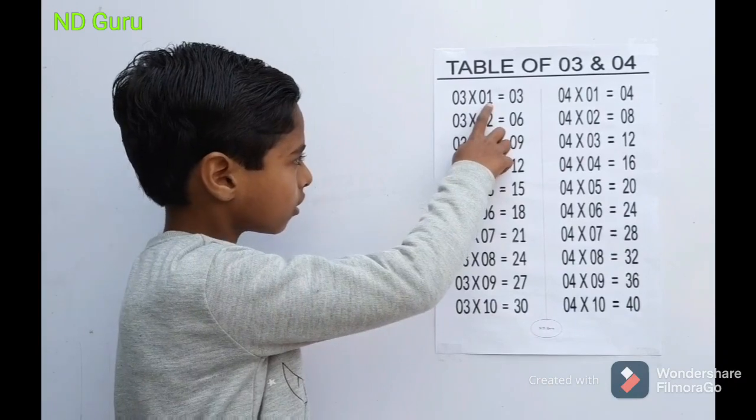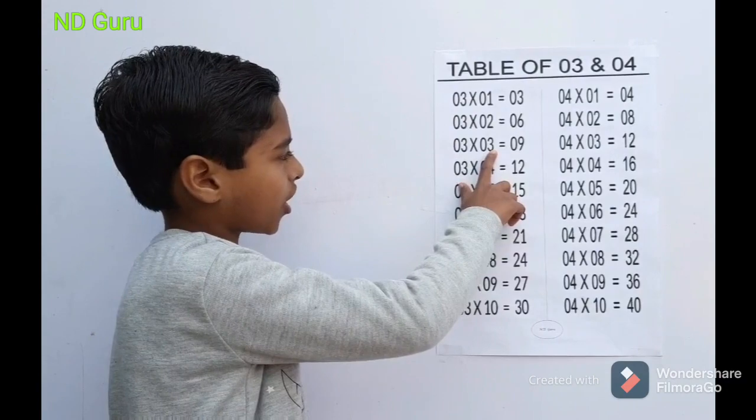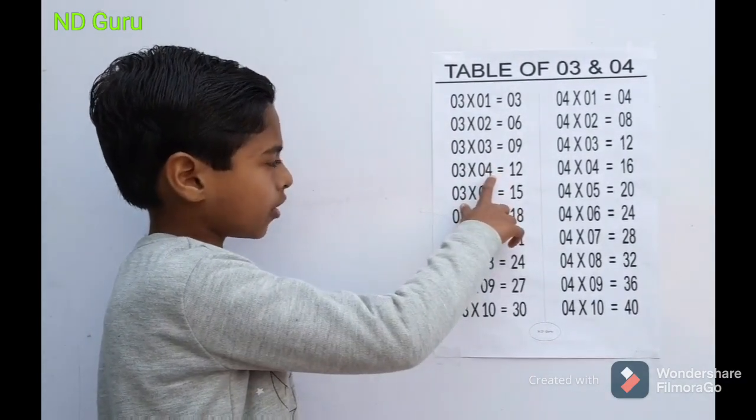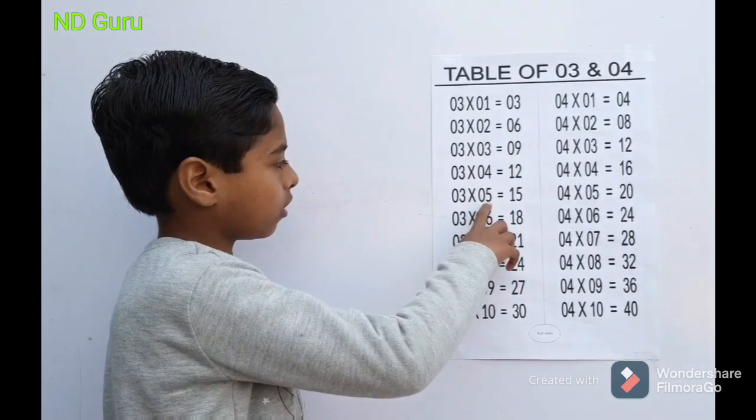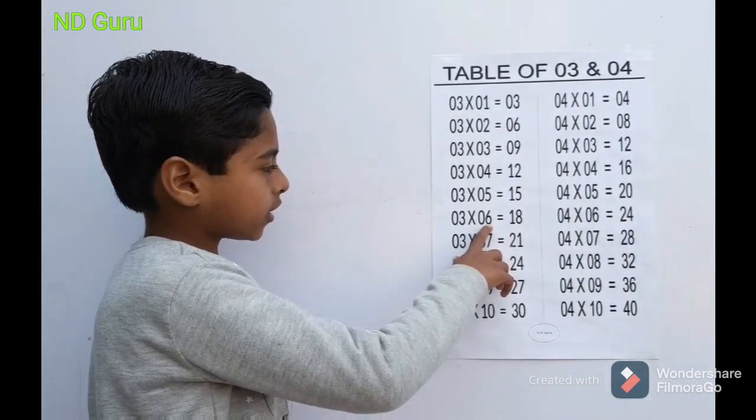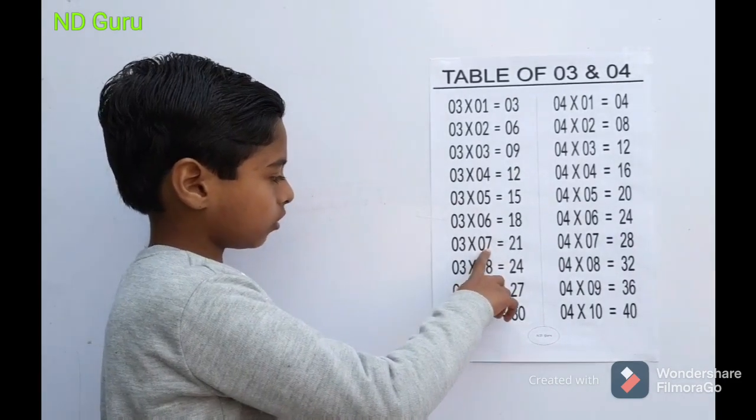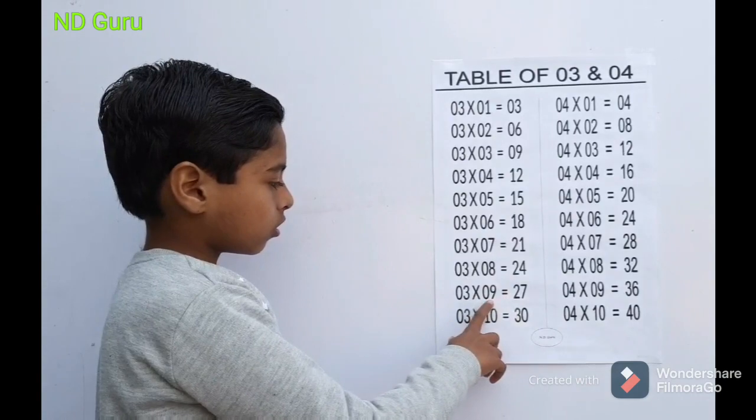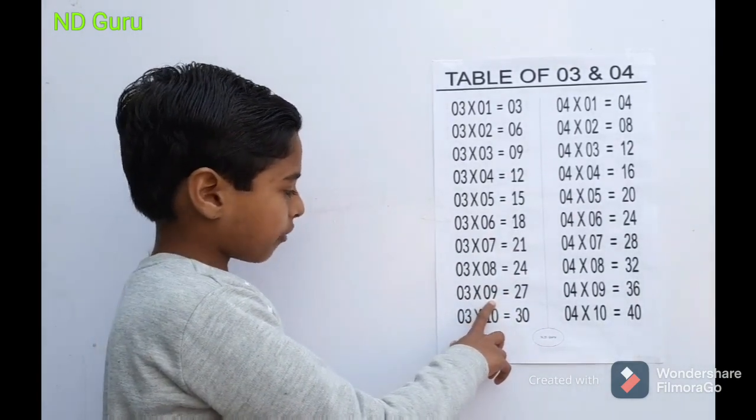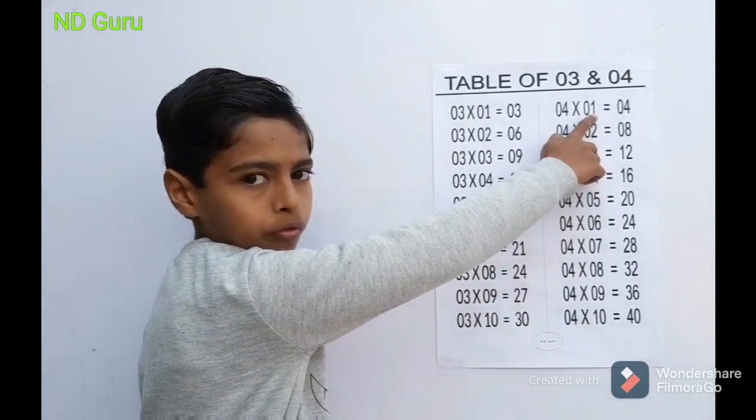3 1s are 3, 3 2s are 6, 3 3s are 9, 3 4s are 12, 3 5s are 15, 3 6s are 18, 3 7s are 21, 3 8s are 24, 3 9s are 27, 3 10s are 30. Table of 4.